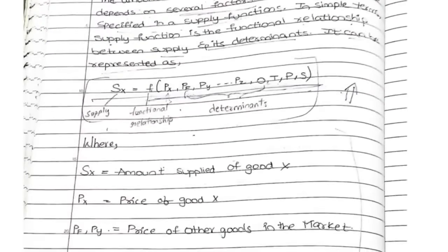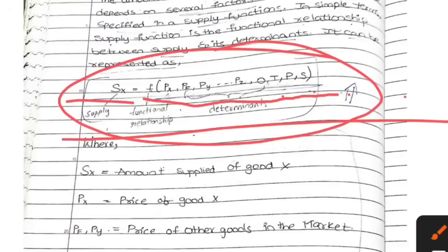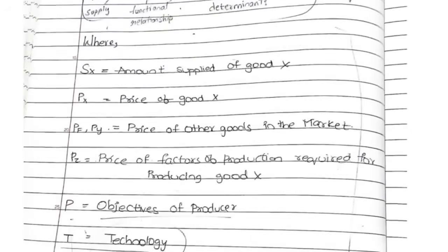What are the factors and determinants of the law of supply? You need to remember the formula: Sx = f(Px, Pf, Py, Pz, O, T, Ps). When your determinants are changing, automatically your supply will also change. When supply increases, demand also increases and price also increases; when price decreases, supply also decreases because of its determinants. Sx is nothing but supply of good X, Px is price.